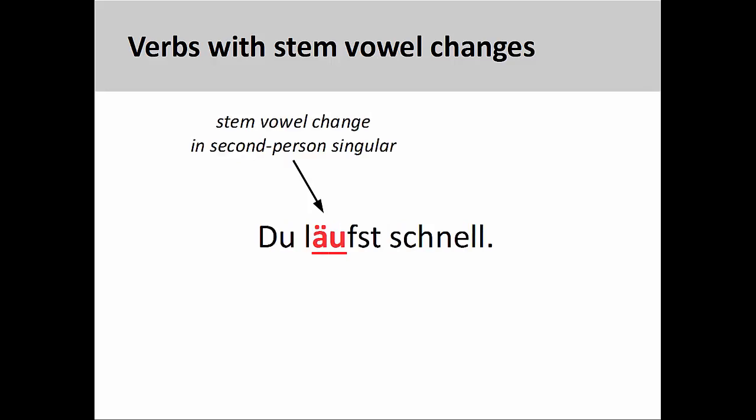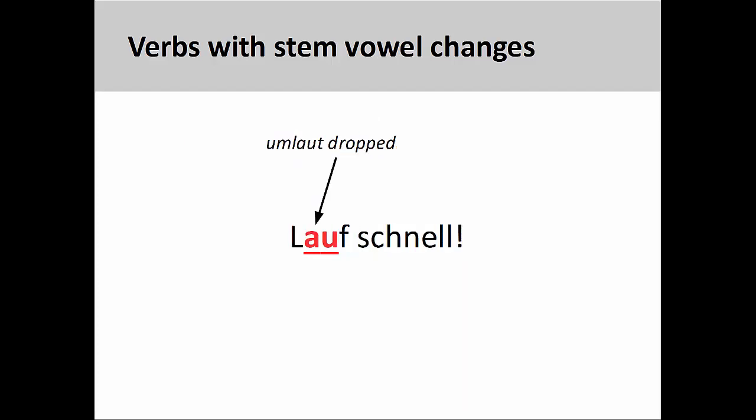If however this stem-vowel change involves the addition of an umlaut, this umlaut is dropped in the informal imperative. So, for example, the stem-vowel in the verb laufen, meaning 'to run,' changes from a to ä in the second person singular: 'Du läufst schnell,' 'you run quickly.' In the imperative, however, the umlaut would be dropped from the verb stem: 'Lauf schnell,' 'run quickly.'